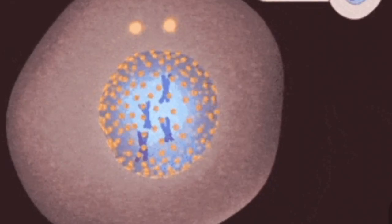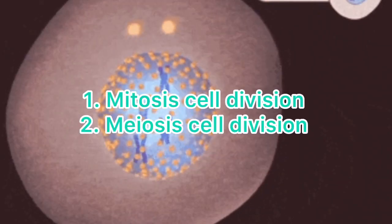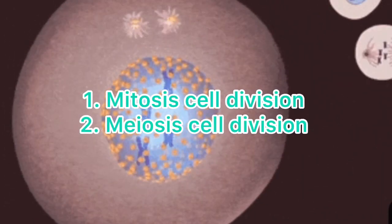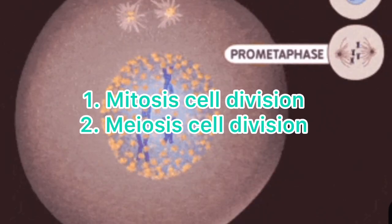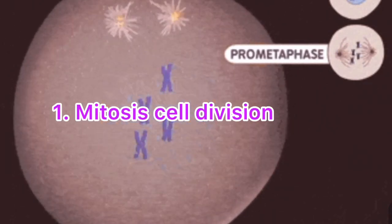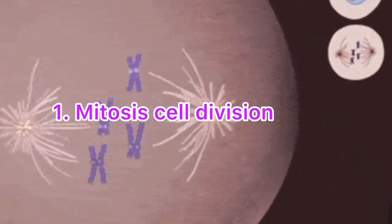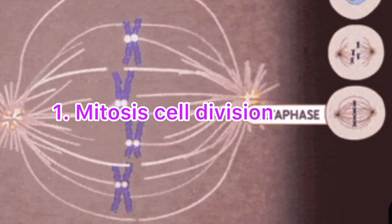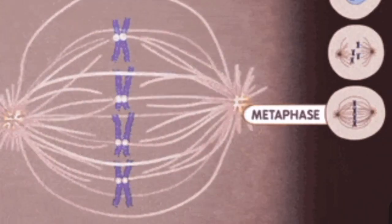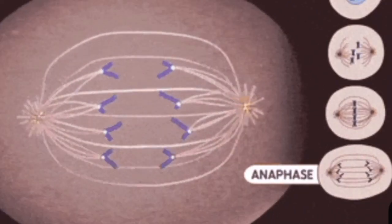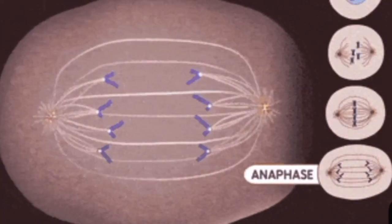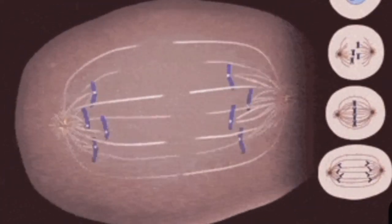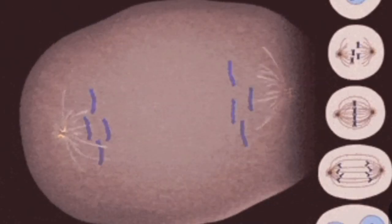In human body, mainly two types of cell division occur: number one, mitosis cell division; number two, meiosis cell division. Mitosis cell division is responsible for overall body growth and wound healing capacity of human body, while meiosis cell division is responsible to produce cells which determine whether the person is male or female.